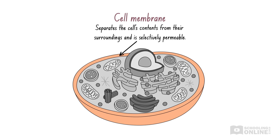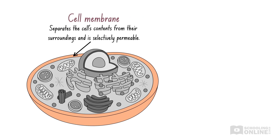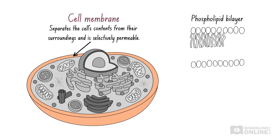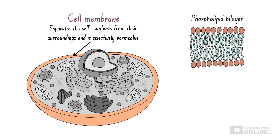The cell membrane is made of a phospholipid bilayer, which consists of two layers of phospholipid molecules. Phospholipid molecules are comprised of a phosphate head and a fatty acid tail. We'll discuss the phospholipid bilayer in our upcoming videos on the cell membrane.